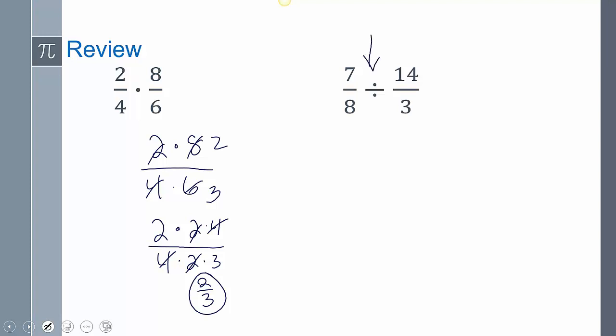When you have division, you have to turn it into multiplication. And you do that by doing the reciprocal of the second fraction. So that's 7 over 8 times 3 over 14. And then the same thing happens. 7 times 3 over 8 times 14. The 7s reduce, and so you get 3 over 16.